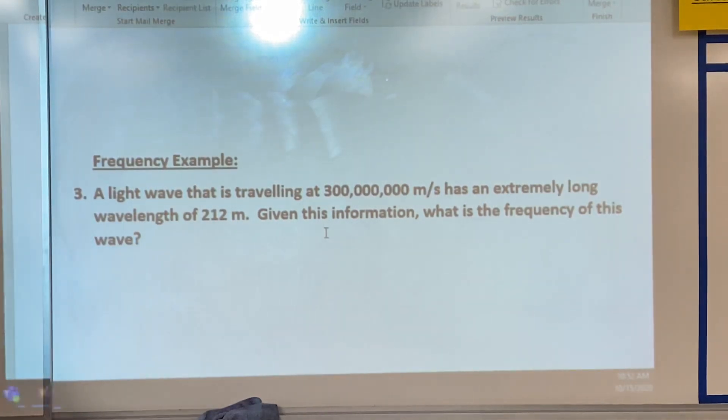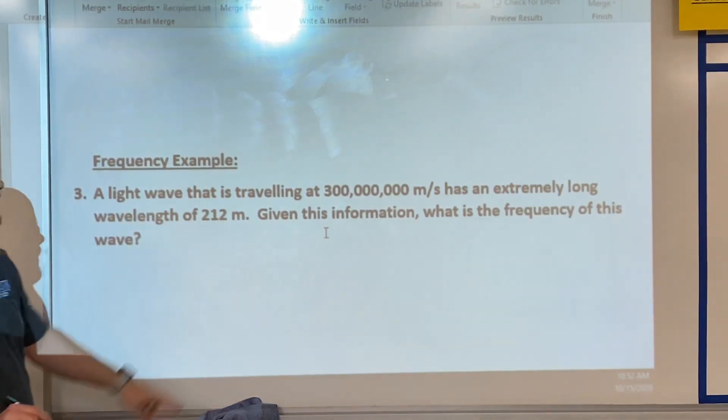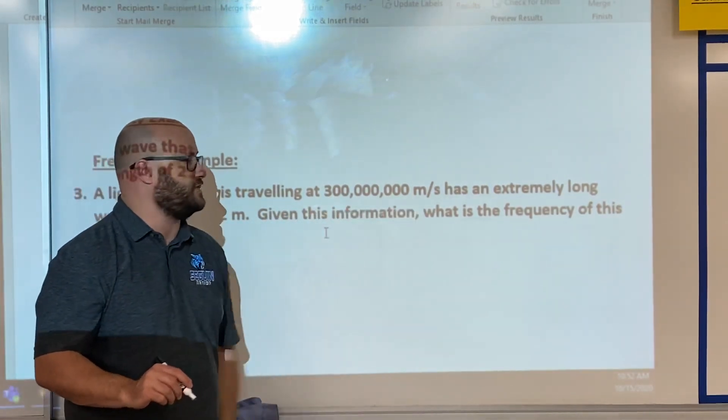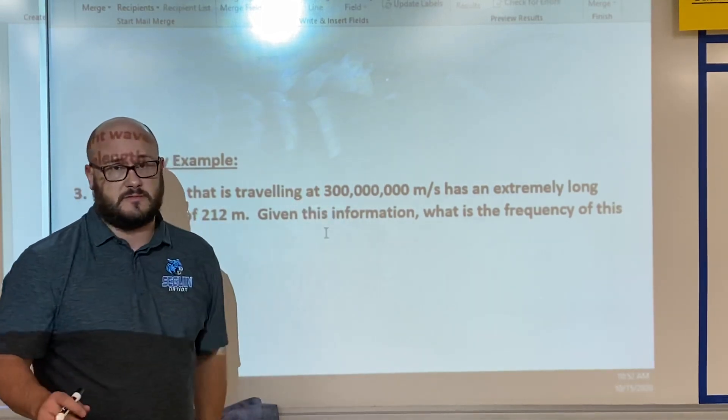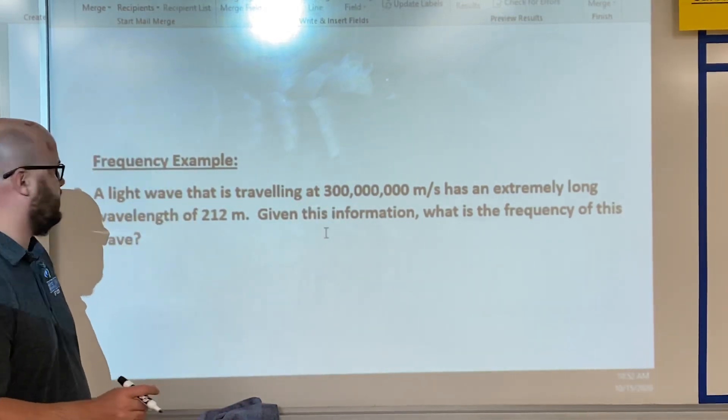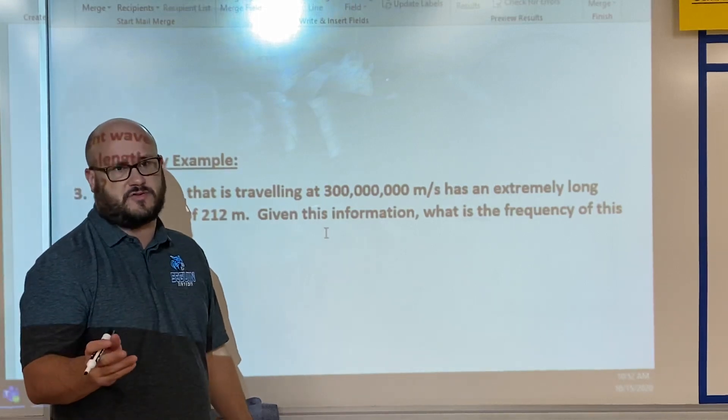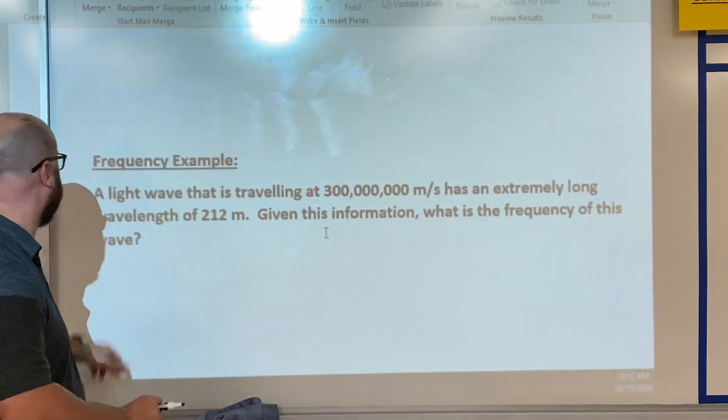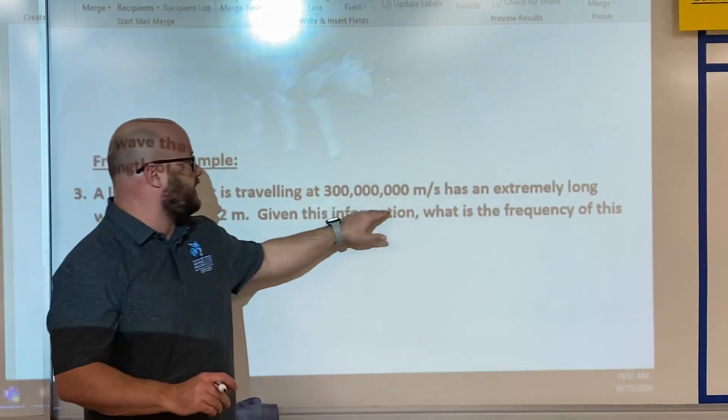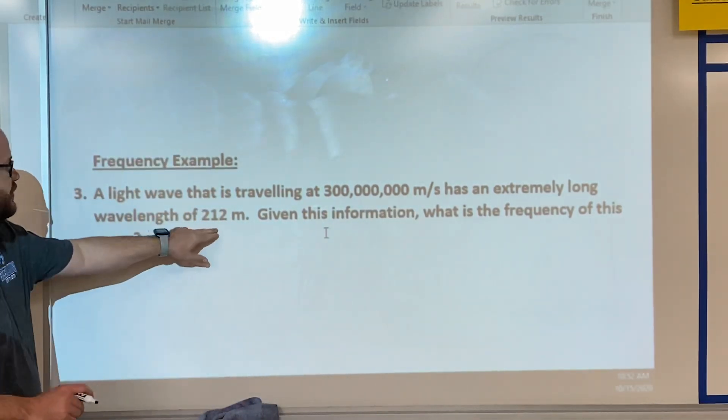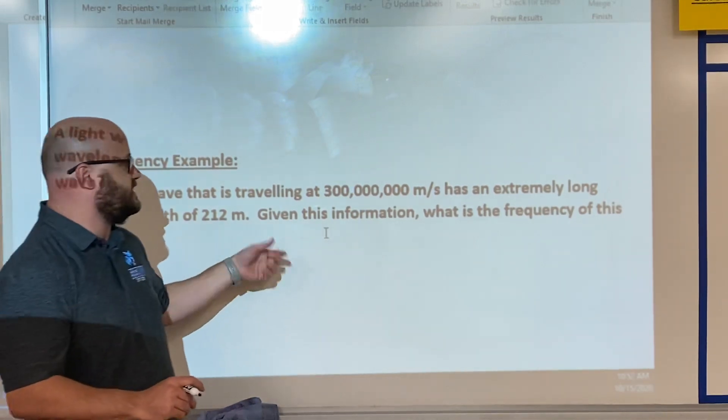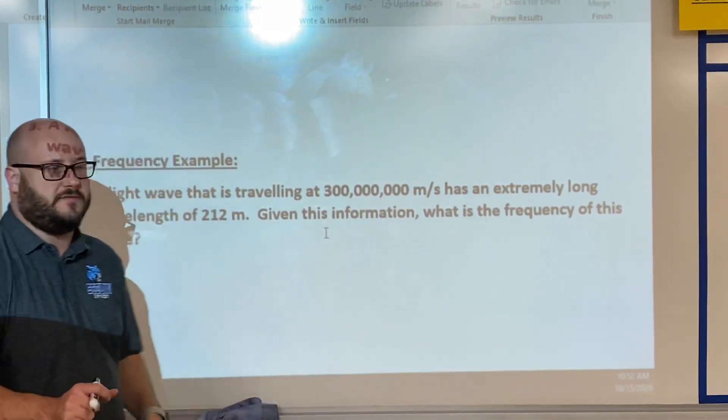And this is an example about frequency. A light wave that is traveling at 300 million meters per second, all light travels at that exact same speed, visible light. We're talking about visible light and the UV spectrum which we've already learned about. Light wave traveling at 300 million meters per second has an extremely long wavelength of 212 meters. Given this information, what's the frequency of this wave?